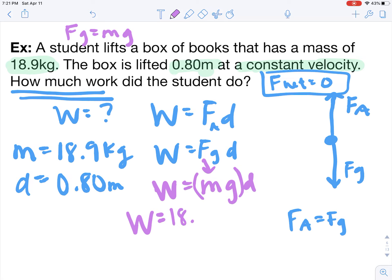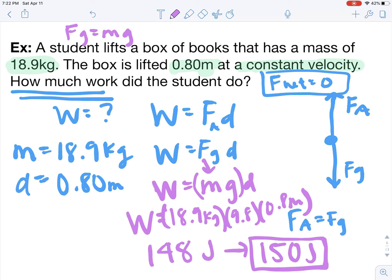So plugging in: 18.9 kilograms times 9.8 meters per second squared times 0.8 meters. So if you plug all of this into your calculator, you should get a number. And I got about 148 joules, and if we were being good and rounding to proper sig figs I would maybe round that to about 150 joules of energy or work in this case.